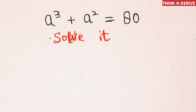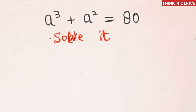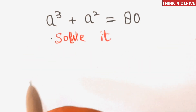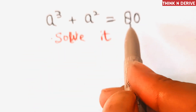Hello everyone, we have a nice polynomial equation: a³ + a² = 80. From one side we have exponents and from the other side we have a number. I'm sure most of you have already figured out its solution. Let's see if your solutions are correct — let me know in the comment box if you approached the same method I am going to use. So let's start.